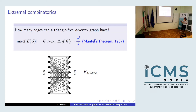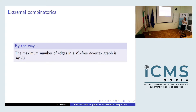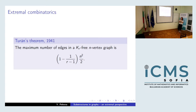Going one level up from triangles to the complete graph on four vertices, K₄, the maximum number of edges in a K₄-free graph is n² over 3. For K₅ it's 3n²/8. Completing this sequence gives Turán's theorem — the second theorem in a graph theory course — giving the maximum number of edges in an n-vertex graph free of K_r, the complete subgraph on r vertices. There is again a unique extremal example that attains this bound.